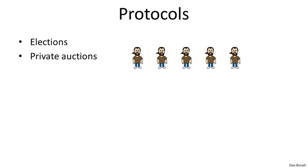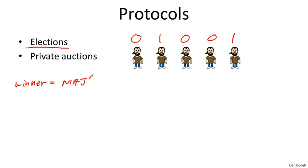Another application of cryptography has to do with more abstract protocols. The first example is election systems. Suppose we have two parties — party zero and party one — and voters vote for these parties. The voters would somehow like to compute the majority of the votes, but do it in such a way that nothing else is revealed about their individual votes. The winner of the election is the party who receives the majority of the votes.